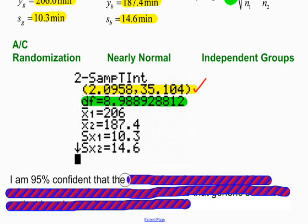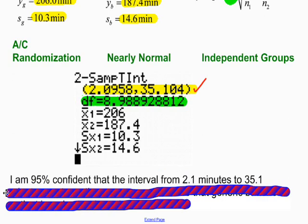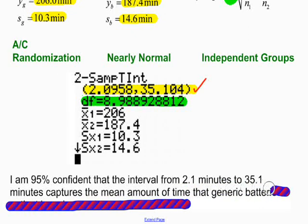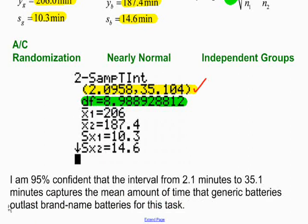So here's what I would write. I am 95% confident that the interval from 2.1 minutes to 35.1 minutes captures the mean amount of time that generic batteries outlast brand name batteries. So I know that the confidence interval is trying to find by how long, that's what the confidence interval is trying to find. I'm 95% confident that the interval from 2.1 minutes to 35.1 minutes captures the average amount of time that generic batteries will outlast brand name batteries for this particular task.